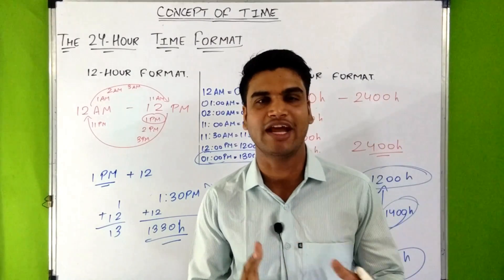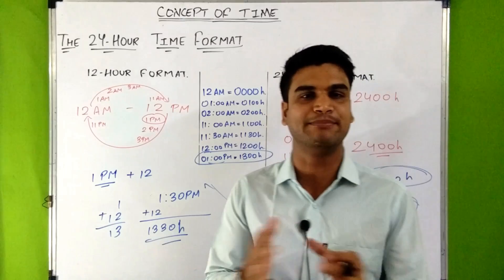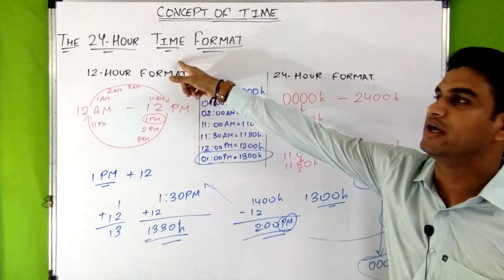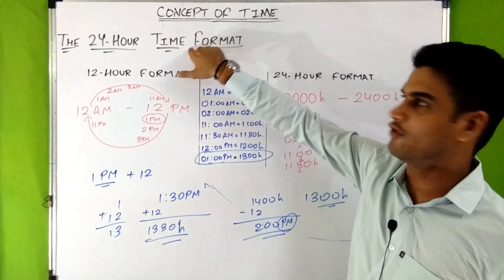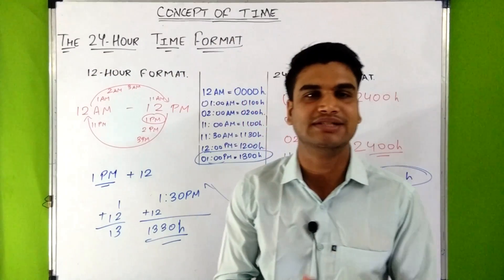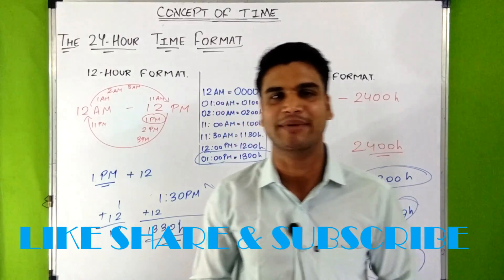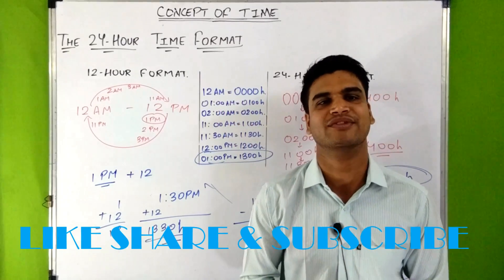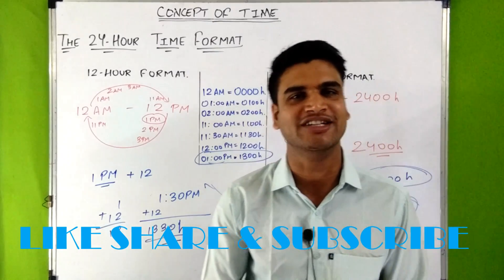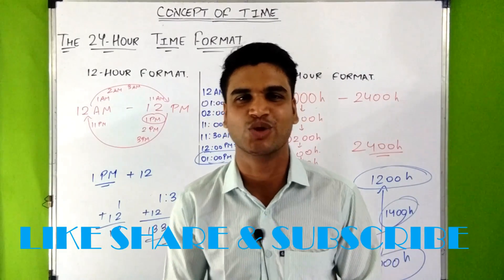This was the concept of the 24-hour time format. I would like to ask you: why are the arrival and departure times of trains and flights given in 24-hour format rather than 12-hour format? Please answer in the comment section. I hope you liked the video — please click the like button, share the video, and subscribe to the channel. Thank you so much.